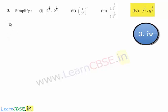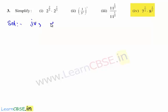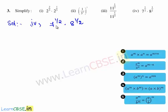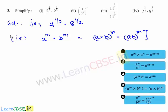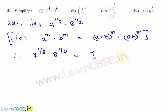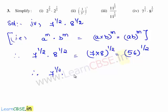Now let us move on to the fourth bit: simplify 7 raised to the power of 1 by 2 times 8 raised to the power of 1 by 2. When we multiply two exponents with common powers on different bases, we can directly multiply their bases — that is, a power m times b power m can be written as a times b whole power m. Therefore, 7 raised to the power of 1 by 2 times 8 raised to the power of 1 by 2 can be written as 7 times 8 whole raised to the power of 1 by 2. Since 7 times 8 is 56, this equals 56 whole raised to the power of 1 by 2. Therefore, 7 raised to the power of 1 by 2 times 8 raised to the power of 1 by 2 is equal to 56 whole raised to the power of 1 by 2.